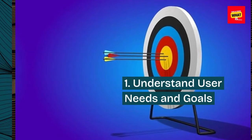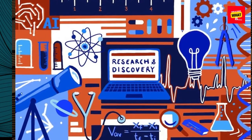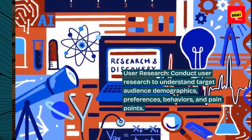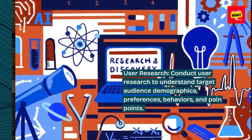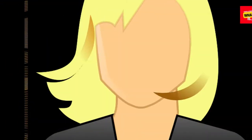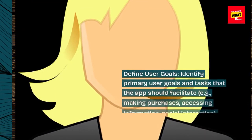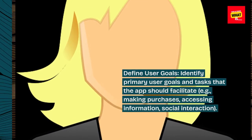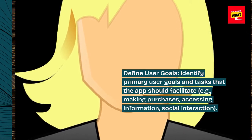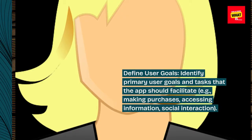Step 1: Understand user needs and goals. Conduct user research to understand target audience demographics, preferences, behaviors, and pain points. Define user goals by identifying primary user goals and tasks that the app should facilitate, e.g. making purchases, accessing information, social interaction.